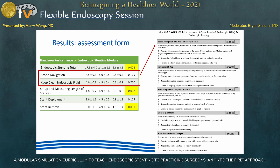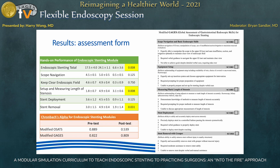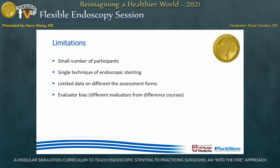Moving forward, we modified the assessment form by combining scope navigation and clear endoscopic field into a single item, as we felt it was important to keep at least one item representing general and basic endoscopic skills. The item for setup and measuring length of stenosis was expanded into two separate items: equipment setup, and measuring and marking the length of stenosis. Looking at Cronbach's alpha for these modules — a measure of internal consistency — the modified GAGES performed slightly better on post-test compared to modified OSATS.